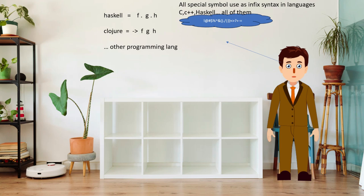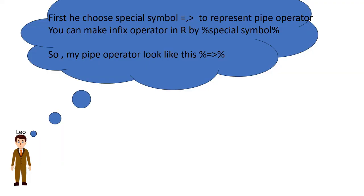Special symbols like @, $, %, +, - are used as infix operators in languages like C, C++, Haskell, and Java — all languages follow this pattern. Leo follows this pattern and chooses a special symbol — equal-to and greater-than — to represent the pipe operator. He gives it the name 'pipe operator'.